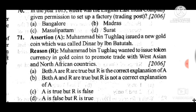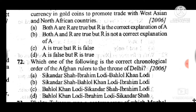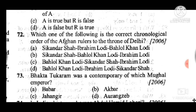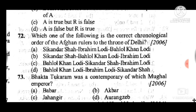Question 72: The correct chronological order of the Lodi dynasty rulers is — answer is C: Bahlul Lodi, then Sikandar Shah Lodi, and last Ibrahim Lodi. Question 73: Bhanudatta Tukaram was a contemporary of which Mughal Emperor? Answer is C, Jahangir.